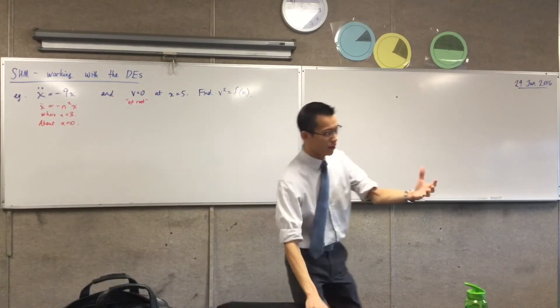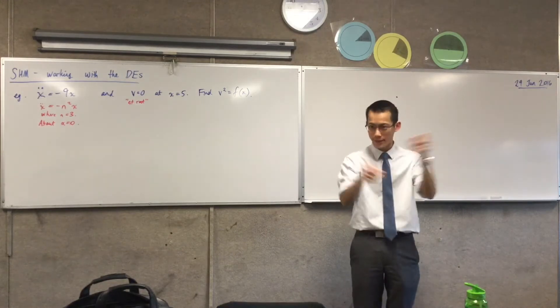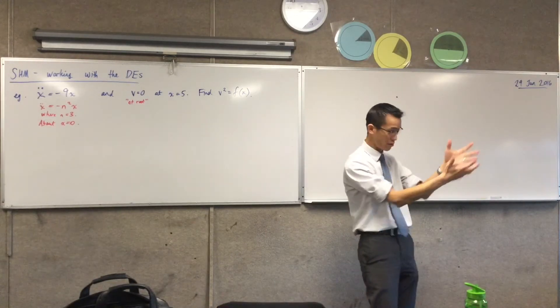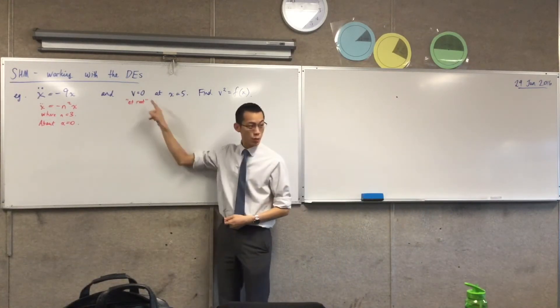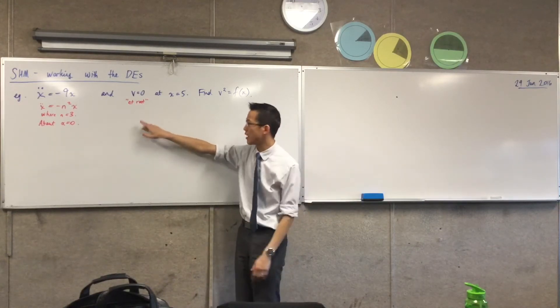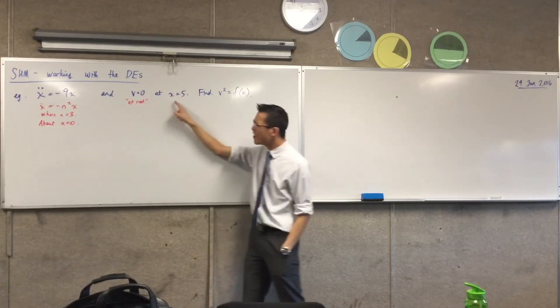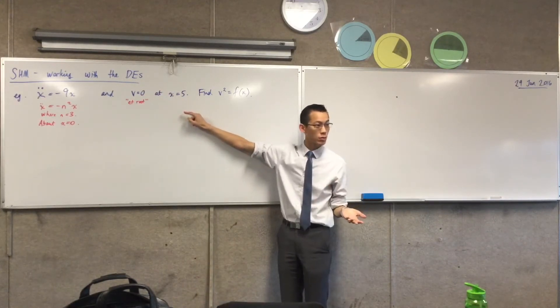The first thing is, when I see something like, say, t equals 0, I think initially, or vice versa, I see initially, and I think t equals 0. When I see v equals 0, at rest is exactly what I should think, or alternatively, if I see the words at rest, I should think v equals 0. Where is it at rest? It's at rest at x equals 5.